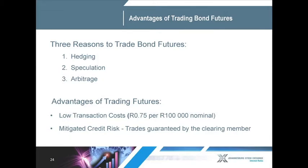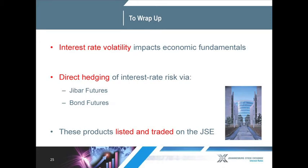As described in those examples, we have a number of participants looking to do different things using bond futures — we've seen it in hedging, speculation, and arbitrage. The advantages include lower transaction costs and the benefit of mitigated credit risk, where a clearing house underwrites the risk of transacting in this market. We spoke about two different products, both the JIBAR futures and the bond futures, and both allow us direct hedging in the interest rate markets. Interest rate volatility impacts economic fundamentals and the prices of goods and services in the economy as a whole, and these products allow us to hedge those risks directly through the Johannesburg Stock Exchange. We hope you will look into these products and use them for your benefit. Thank you.